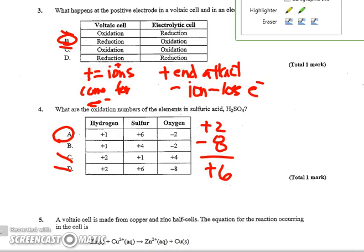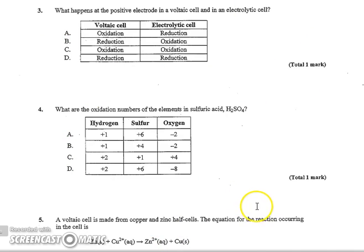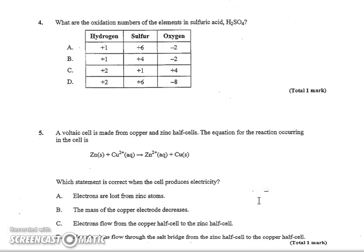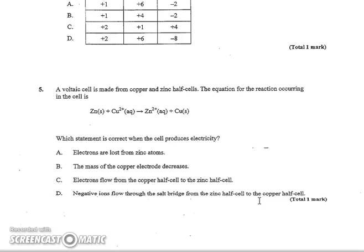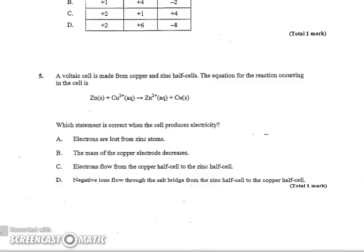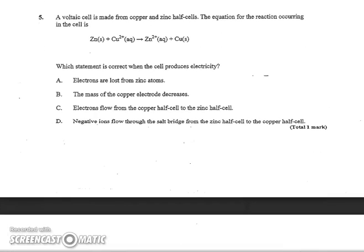Scrolling down then, a voltaic cell is made from copper and zinc half cells. The equation for the reaction occurring is such. So when you look at this, you should be able to see that zinc metal is becoming zinc ion. That means zinc metal is giving up electrons and copper metal is gaining them. So which of these are true? Electrons are lost from zinc atoms.